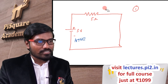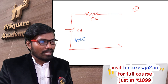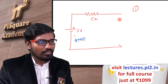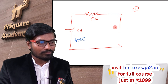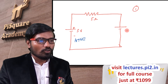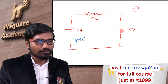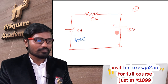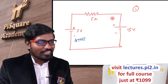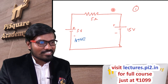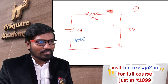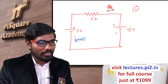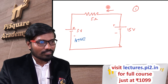Now let me modify the circuit. Let me add another source of 15 volts, with plus and minus. Now the current direction is this direction — the current value is 2 amperes.